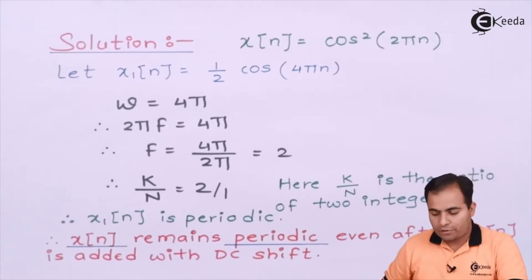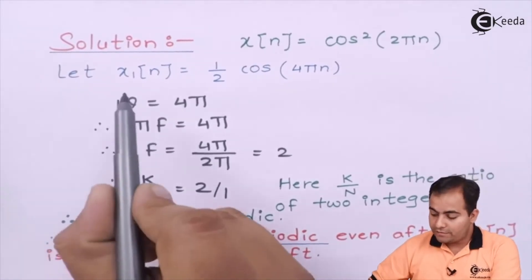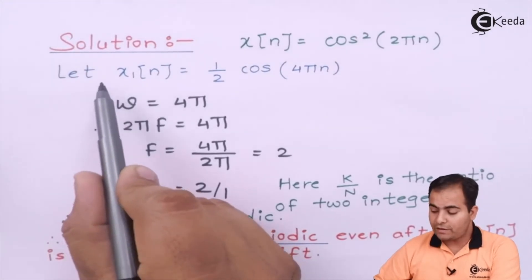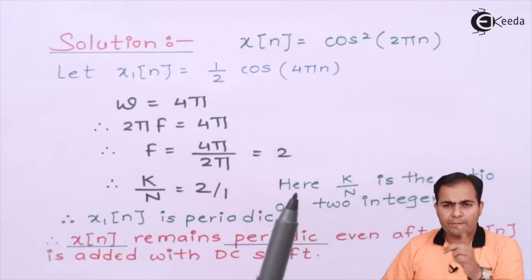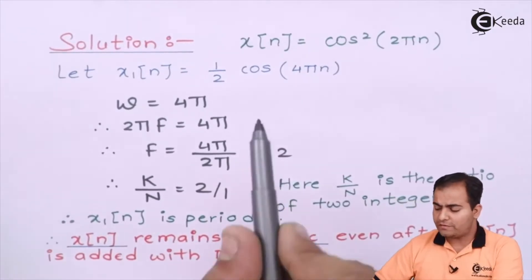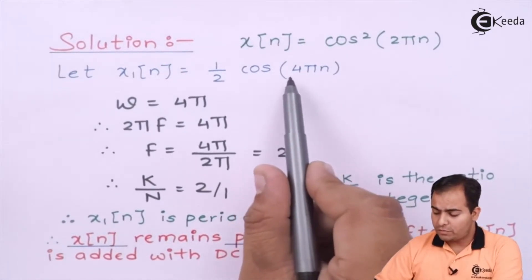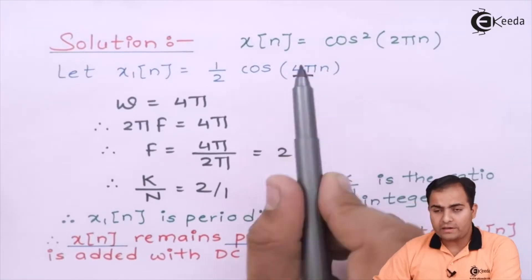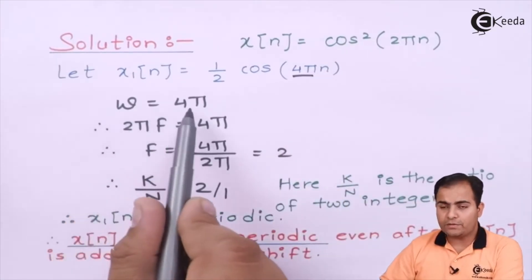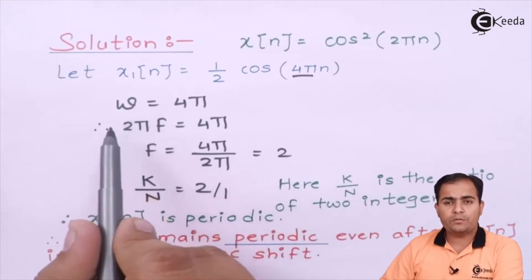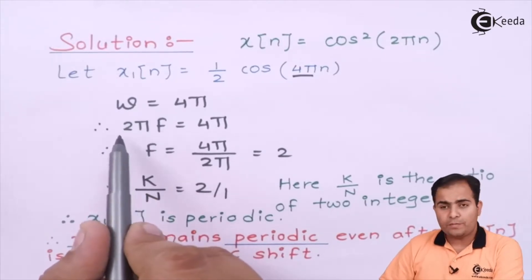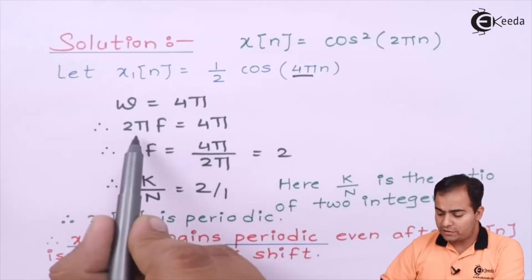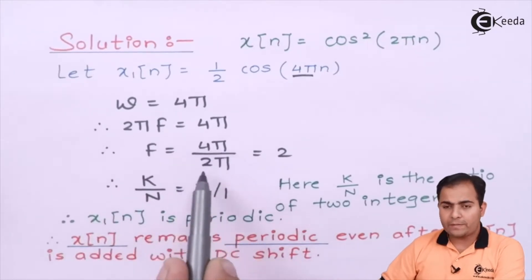Let's see if x₁[n] is periodic or not. Let's say my x₁[n] is half of cos(4πn). I am going to compare the frequency of cos(4πn). This is my frequency omega. I have compared this omega. We know that omega is 2πf, so f is 4π/2π equals 2.